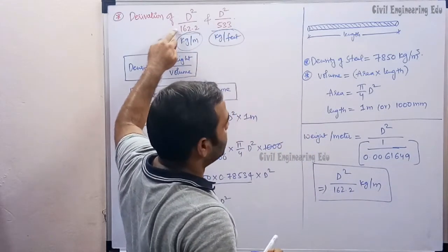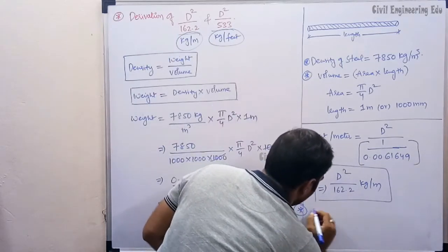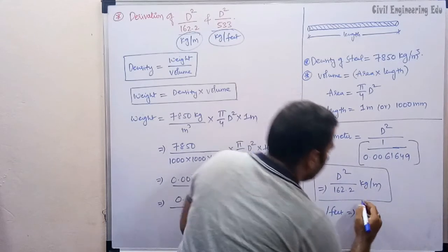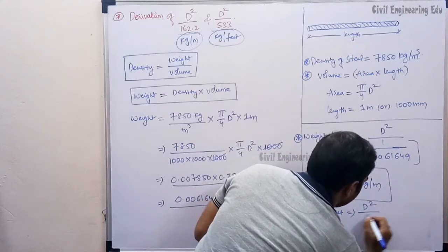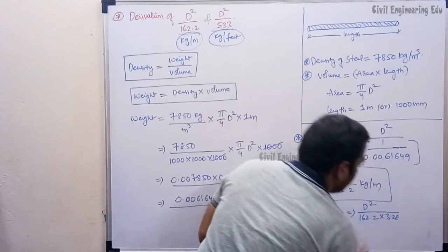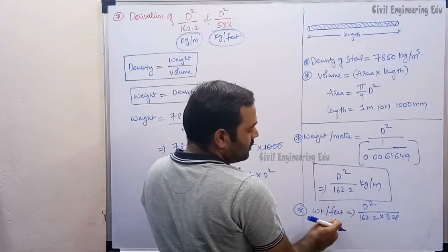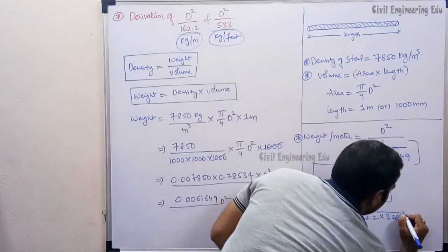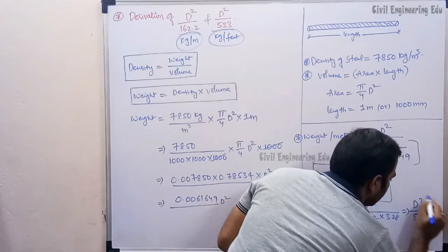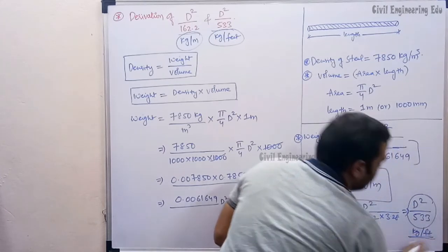To convert this to weight per feet, we use the same expression D² / 162.2 and multiply the denominator by 3.28, since 1 meter equals 3.28 feet. This gives us D² / 533, which is in kg per feet.